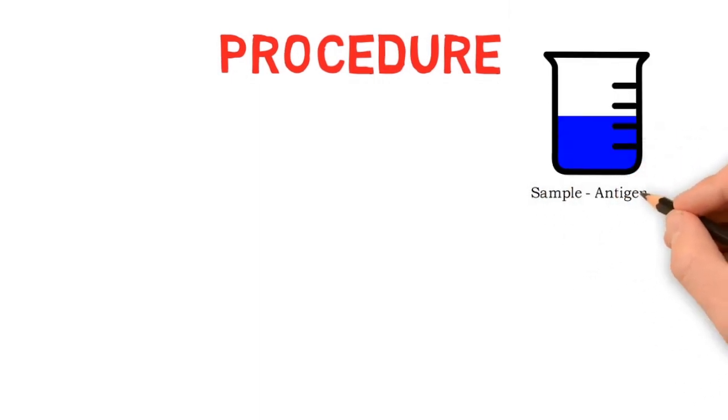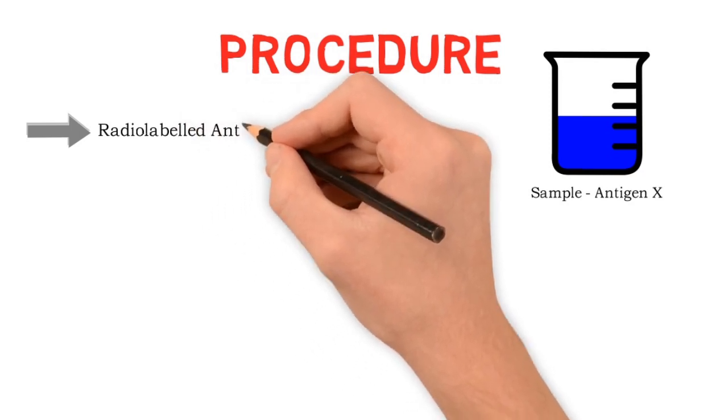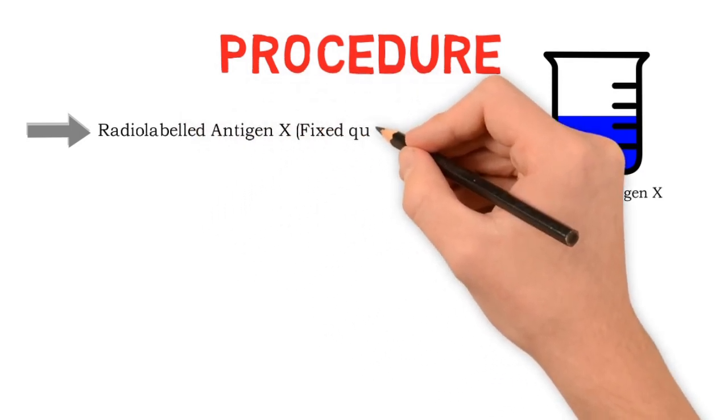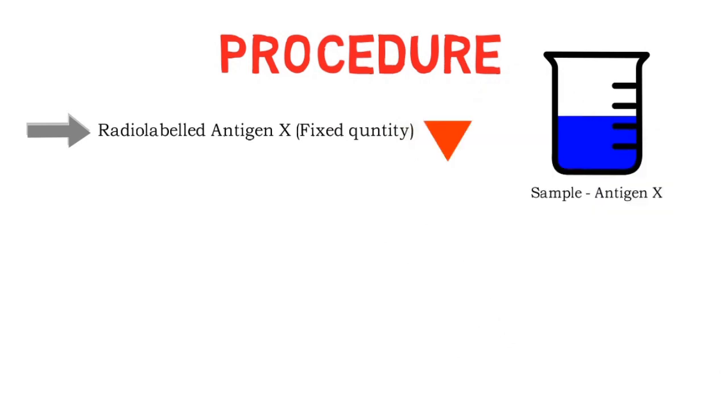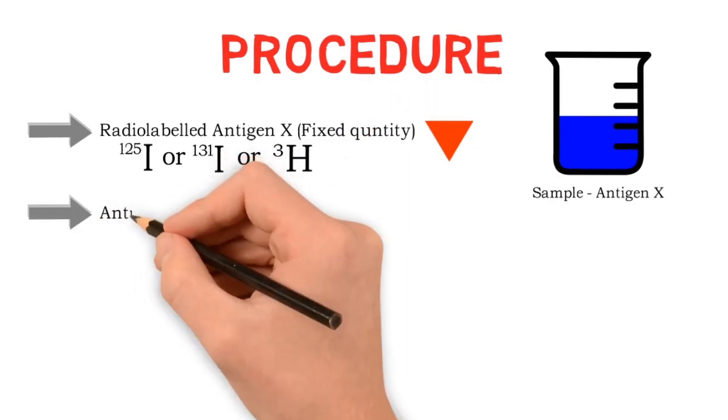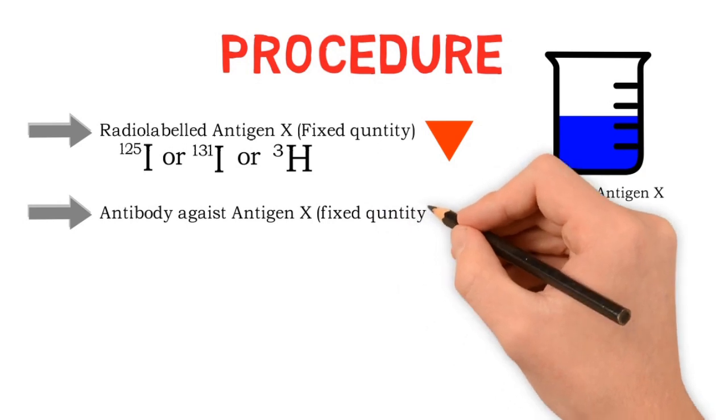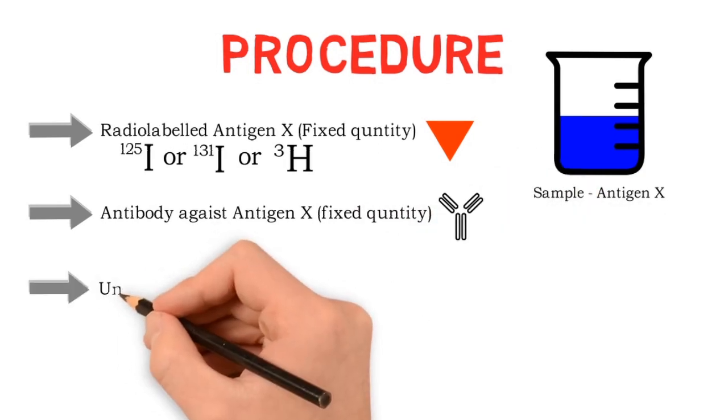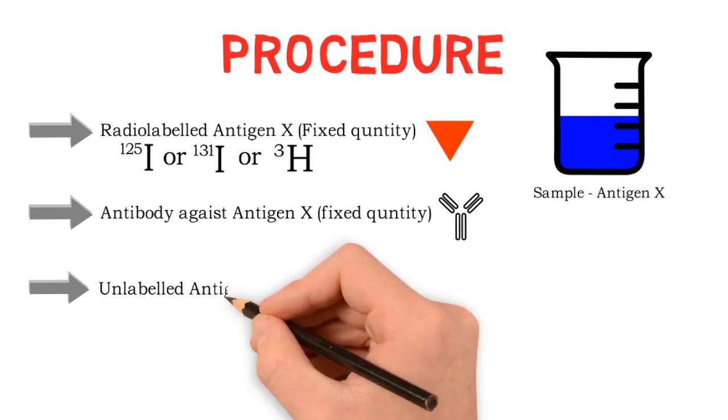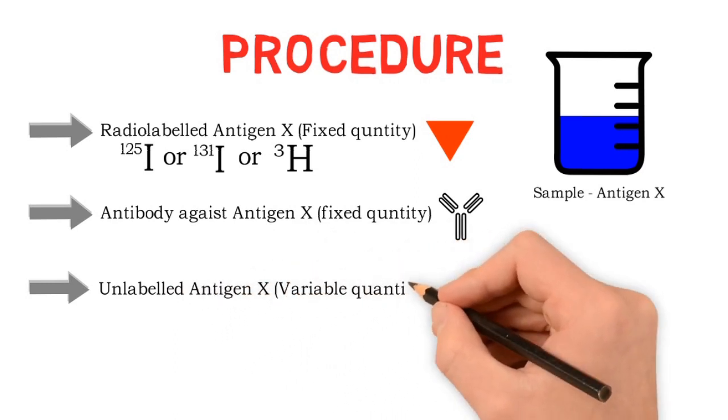Next we will see procedure. Suppose we want to quantitate sample having antigen X. For this we should have three things. First, radiolabeled antigen X of fixed quantity, which we will describe as orange triangle. For labeling we can use iodine-125 or iodine-131 which are gamma emitters, or tritium which is beta emitter. Second thing we should have is antibody against antigen X, again which is of a fixed quantity. And the third thing we should have is unlabeled antigen X which is of variable quantity. We will describe it as blue triangle.